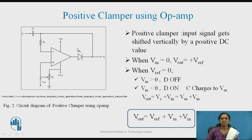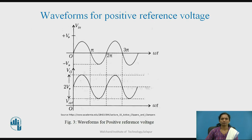Adding both cases from superposition, the total output voltage equation is: V0 = V_reference + Vm + Vin. This is the analysis of the positive clamper using an operational amplifier. Keep in mind that the reference voltage can be positive or negative, and based on that, you will get clamping action in the positive or negative direction. By substituting various values of input voltage, the waveforms confirm that the total swing remains the same but the shifting is with respect to V_reference.